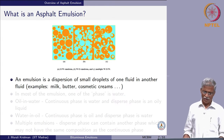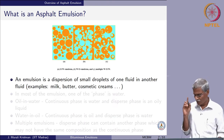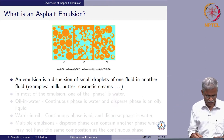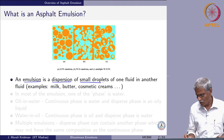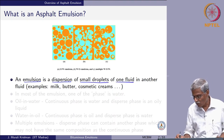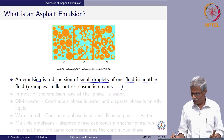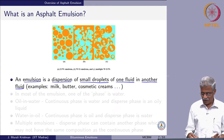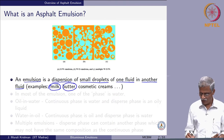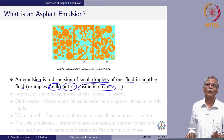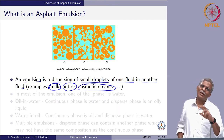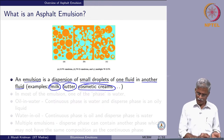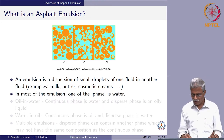What exactly is an asphalt emulsion? An emulsion is a dispersion of small droplets of one fluid in another fluid. Examples include milk, butter, and cosmetic creams. You take one fluid and disperse it in another. The wording seems straightforward and simple, but the complexity is in making one fluid disperse in the other. In most emulsions, one of the phases is always water.